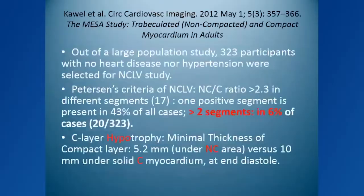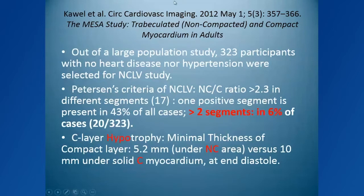A large NIH-promoted study called the MESA trial started introducing this to the literature about 15 years ago. In 2012 they reported that in the general population studied at age 65, looking for factors promoting cardiovascular disease, they described that if you assume two segments of the heart to have high trabeculations, 6% of the general population — in a population of about 1,000 persons — had non-compaction, and they called it non-compaction cardiomyopathy.